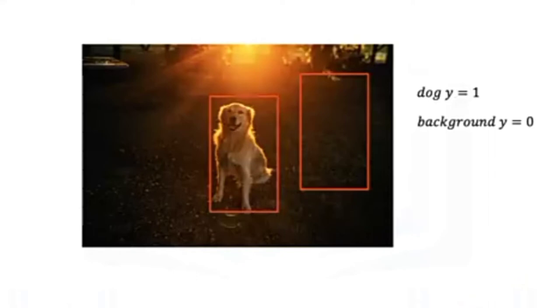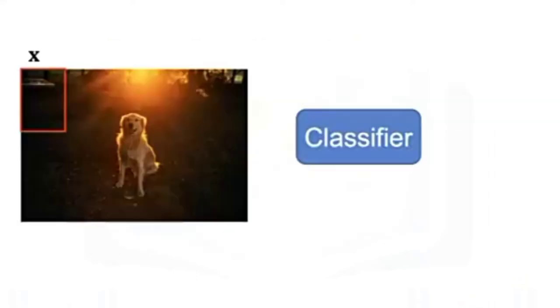The sliding window algorithm is a more systematic approach. We start in one region of the image, classify that sub-image. We then shift the window and classify the next sub-image. We repeat the process.